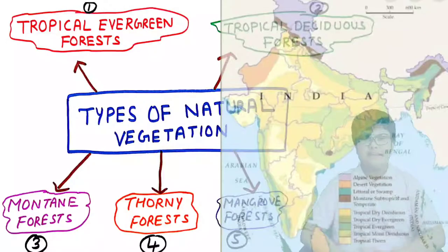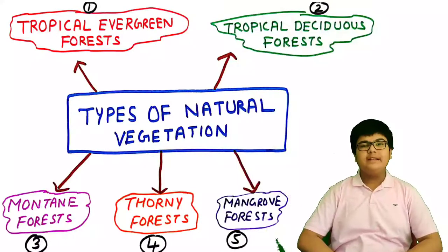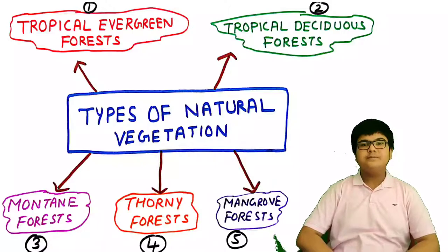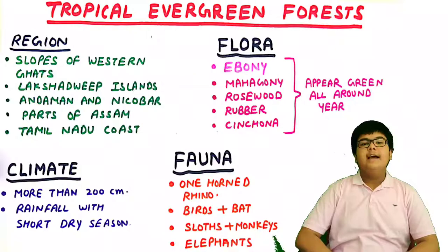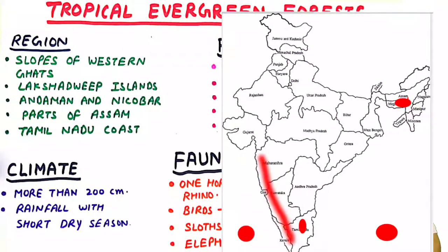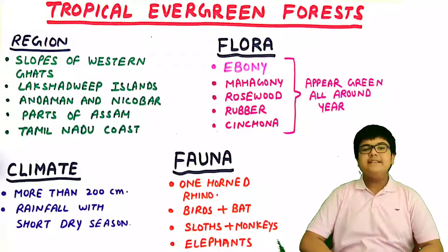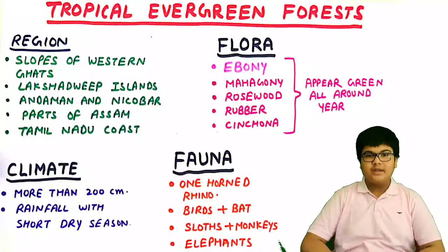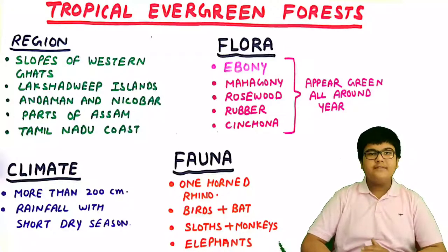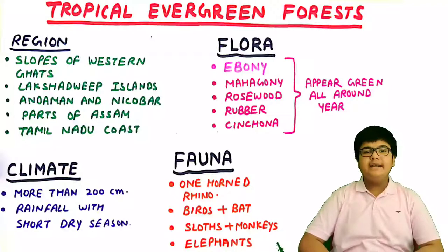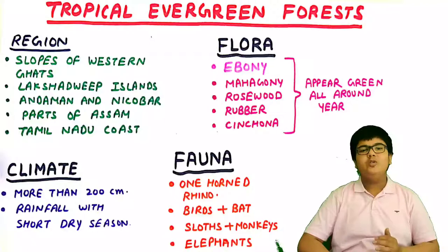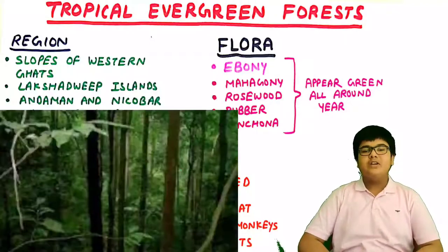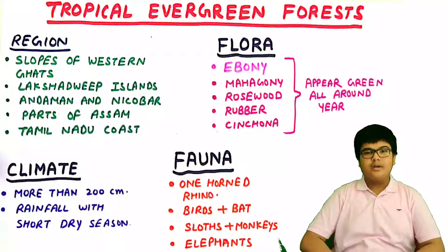In India, five types of forests are found: tropical evergreen, tropical deciduous, mountain forests, mangrove forests, and thorny forests. First, tropical evergreen forests are found on the slopes of the Western Ghats, Lakshadweep Islands, Andaman and Nicobar Islands, parts of Assam, and the Tamil Nadu coast. They receive more than 200 cm of rainfall with a very short dry season. Trees found here include ebony, mahogany, rubber, cinchona, and rosewood.